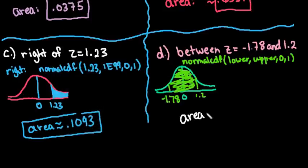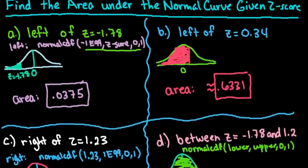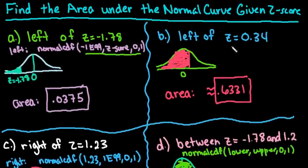So our area between these two values is approximately 0.8473. So just to kind of recap, remember that if you're using normal CDF, if it's between it's just the lower and upper, if it's to the right of you start with the z-score and end with positive infinity, and if it's to the left of you start at negative infinity and end at the z-score given.